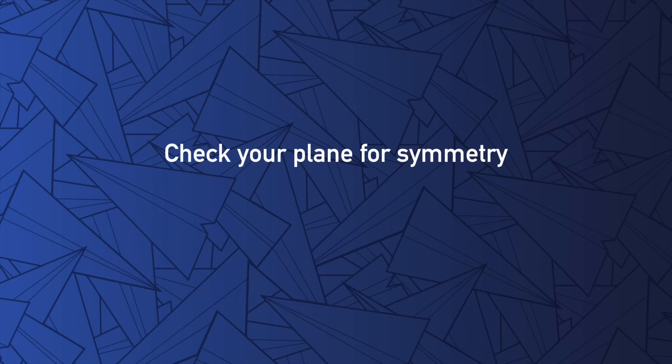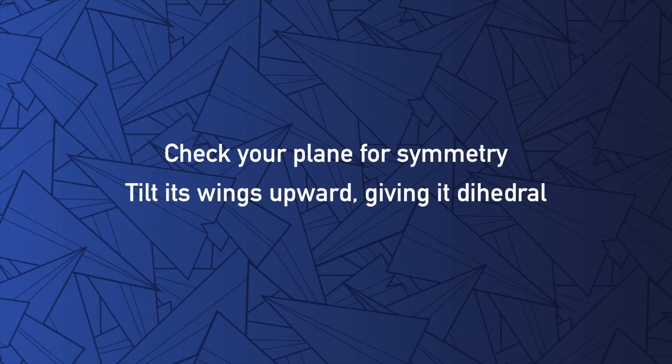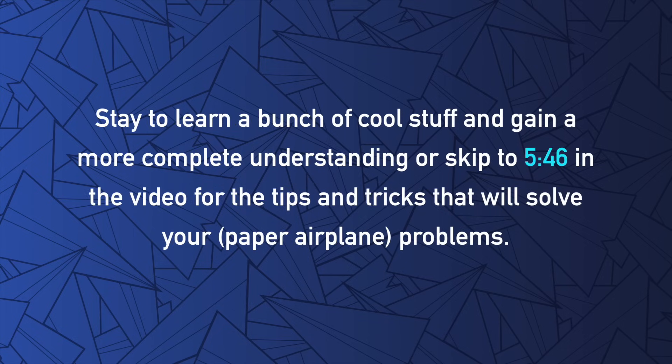At this point, we've covered the very fundamentals of throwing and adjusting your plane. In the next few minutes, we'll be looking at how to fix specific issues in the performance of your plane, but to understand why your paper airplane flies the way it does, it helps to first talk about control surfaces on real aircraft. You can stick around for that if you want a true education, but if you want a quick fix, you can skip ahead in the video — I've put a timestamp here for you.